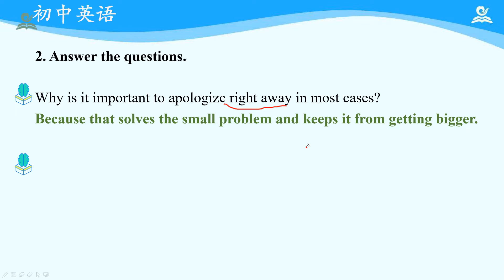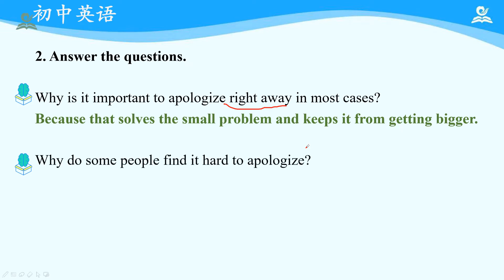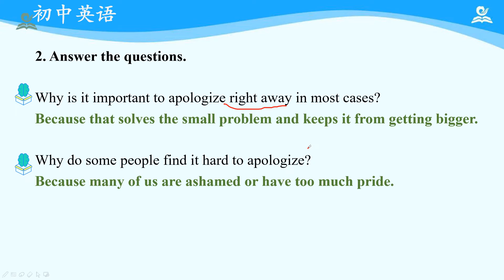第二个问题：Why do some people find it hard to apologize? 对应第二段第一句，答案是：Because many of us are ashamed or have too much pride. 这就是大家常说的面子问题，自尊心太强不利于道歉，也不利于矛盾的解决。